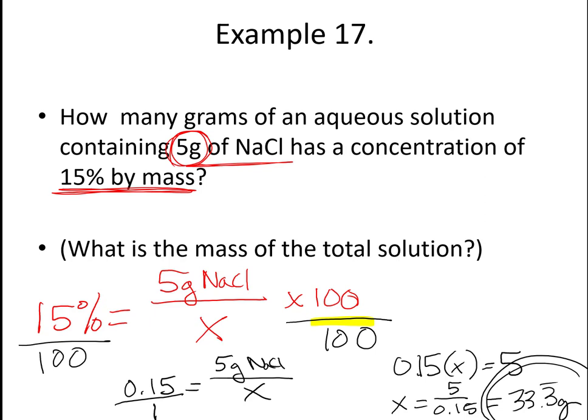So in this problem, because we were given the percentage, and we had to calculate out the mass of our total solution, that's why I divided both sides by 100. Otherwise, I would not be doing that.